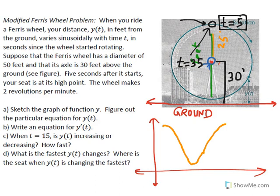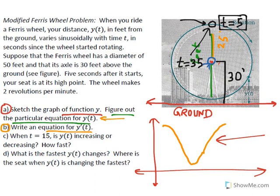Part A: Sketch the graph of function y and write a sinusoidal model giving the height of your gondola above the ground as a function of time. Part B: Write an equation for the derivative of the function found in Part A. Parts C and D will use that derivative to answer further questions.